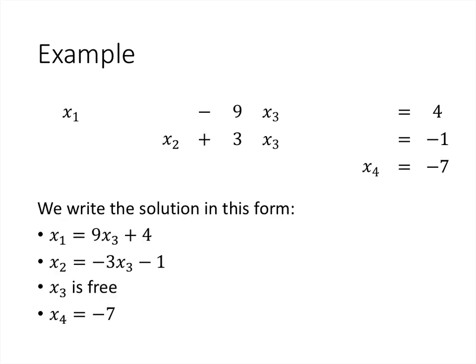We can take those equations and solve them for the basic variable. Every basic variable will only appear once, and it'll appear with a coefficient of 1. So solving for the basic variable is as simple as adding or subtracting the free variables from both sides to get the variable by itself. We get the solution in this form: x1 equals 9x3 plus 4, x2 equals negative 3x3 minus 1, x3 is free, and x4 equals negative 7.